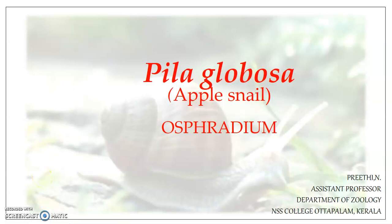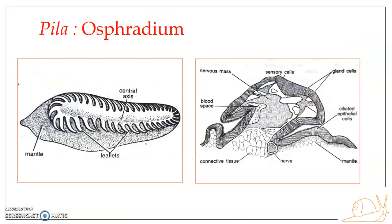Welcome to a new session on Pila Globosa. In this presentation we will be looking into the structure of the osphradium, one of the most important sense organs in Pila. The osphradium is single in number, situated on the left side of the mantle cavity, suspended from the roof of the cavity, found close to the entrance of the left nuchal lobe. The osphradium is a chemoreceptor, or we can call it an olfactory organ.